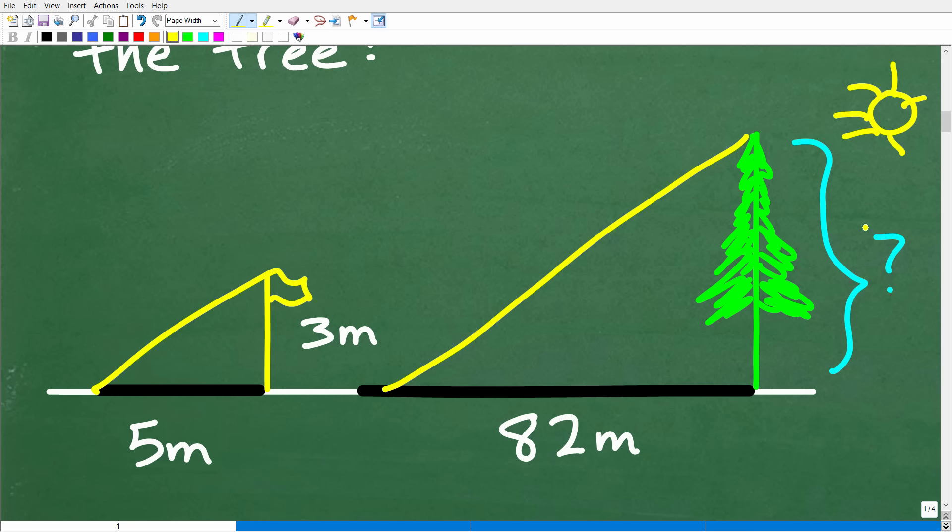And what we're going to do here, we'll use a variable X to represent the height of the tree. Okay, now, before we set up a proportion, let's kind of establish a ratio, okay? So we have the height to the shadow, so we can kind of maybe write a fraction this way. The height of whatever to its shadow is what? Well, the height over here is 3 to the shadow is 5.